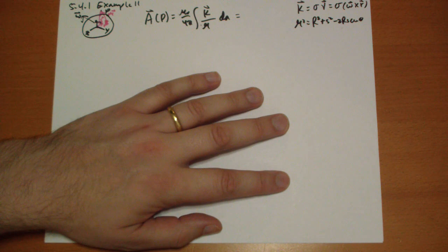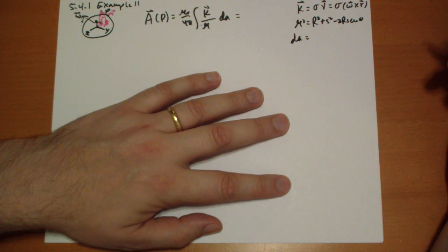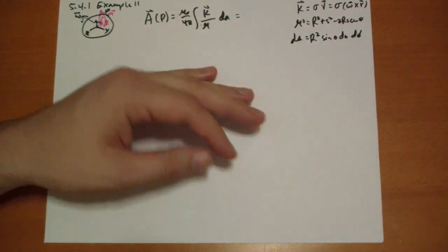And the dA is going to be equal R squared sine theta, D theta, D phi. All right.